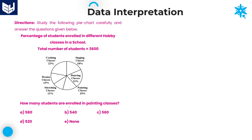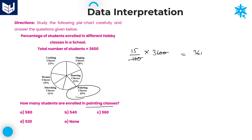The next question asks how many students are enrolled in painting classes. It is clear that 15% of students are enrolled in painting. Calculate 15% of 3600: cancel the two zeros, then 36 into 15 — 36 tens is 360, half of that is 180, so 360 plus 180 equals 540. The answer is 540, and option B is correct.